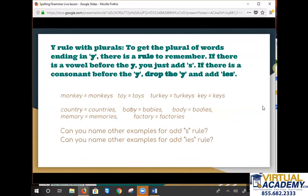Okay, another issue that some students have is the Y rule with plurals. Sometimes you add just an S, other times you have to drop the Y and add ES. So the rule with this is if there's a vowel before the Y, like in monkey, then you just add an S. If it's a consonant, then you would go ahead and have to drop the Y and add IES, like in babies, bodies, factories, memories.